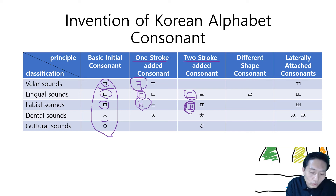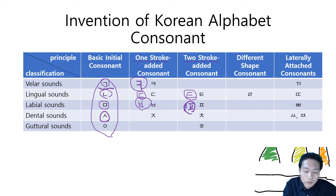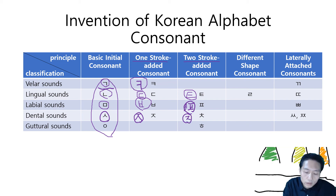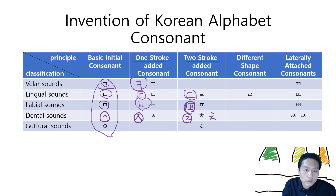Let's look at 시옷. 시옷 is a dental sound — the shape of teeth. When you add one more stroke, we get 지읒, which is a tougher sound. Add one more stroke and it becomes 치읓. Add one more stroke and you get 히읗. These are all dental sounds.